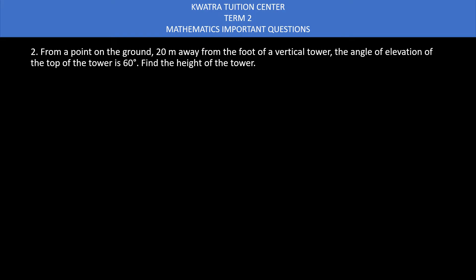So this is very easy. They are saying a point on the ground, and it is 20 meters away from the foot of the vertical tower. This is your tower. Let's say the height of the tower is h.